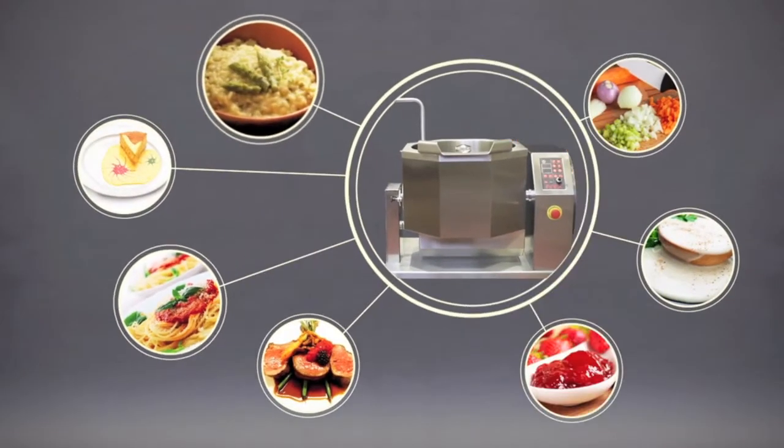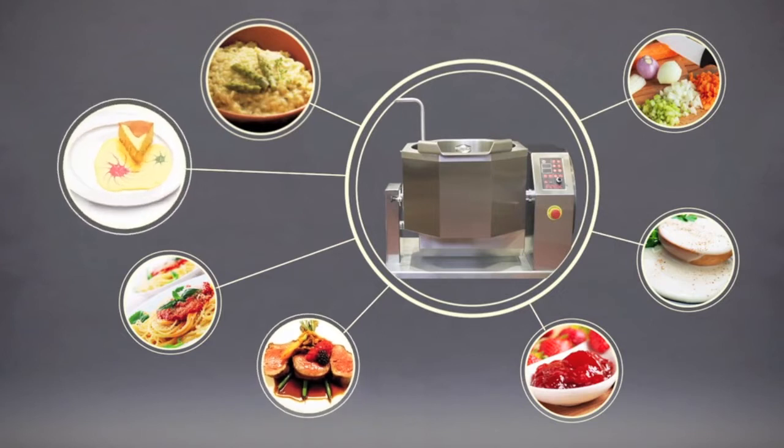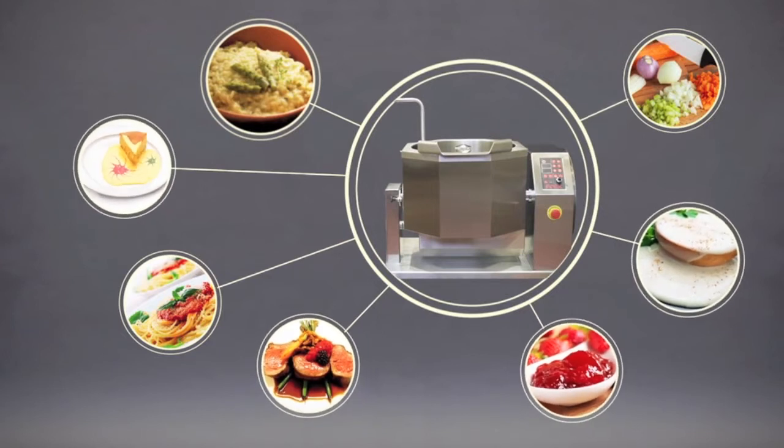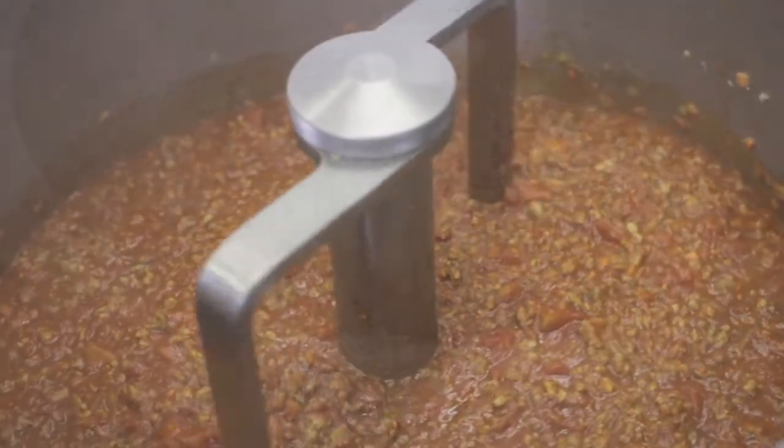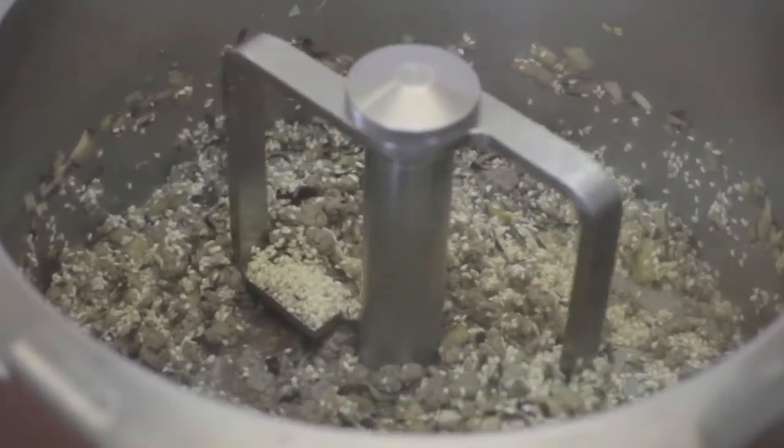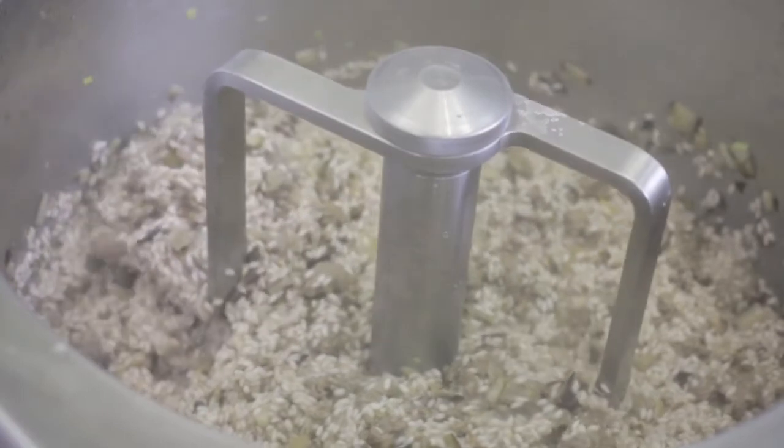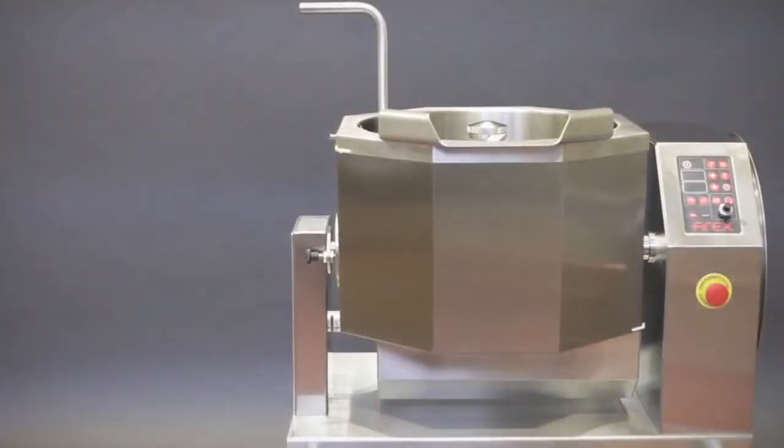Bolognese sauce, risottos, stews, caramel, jam, bechamel sauce and saute are just a few examples of the cooking power of Kuchimix 30 and its 392 degrees Fahrenheit of heat.